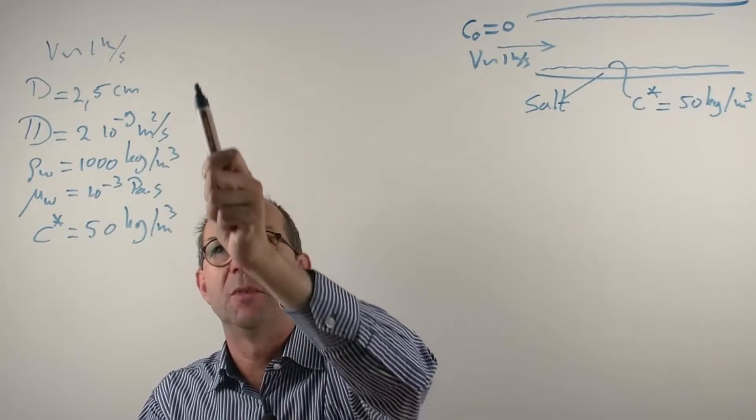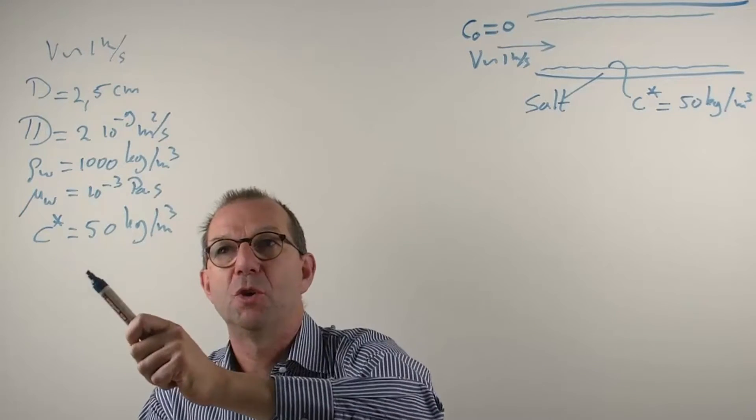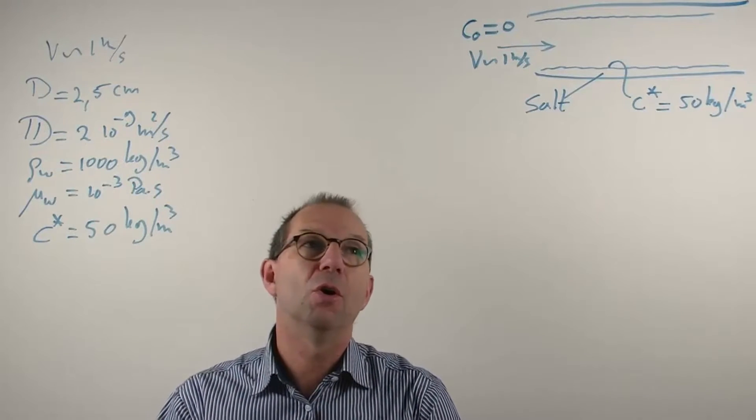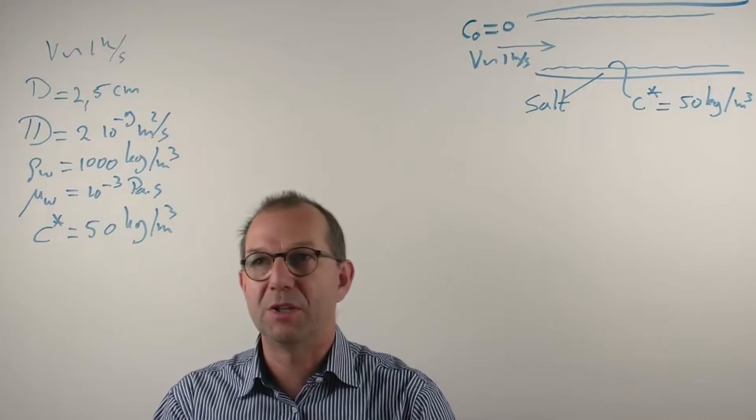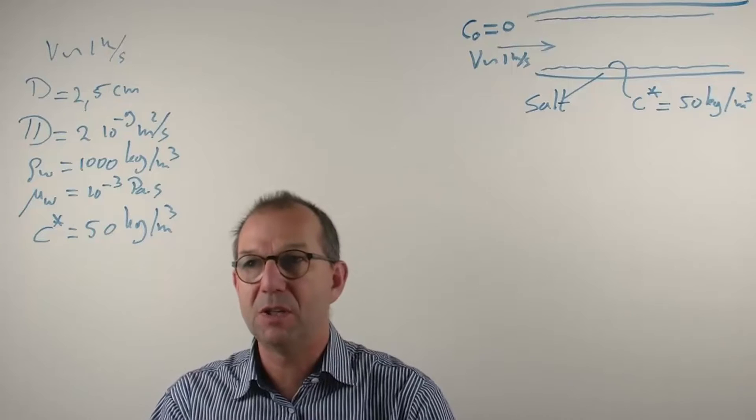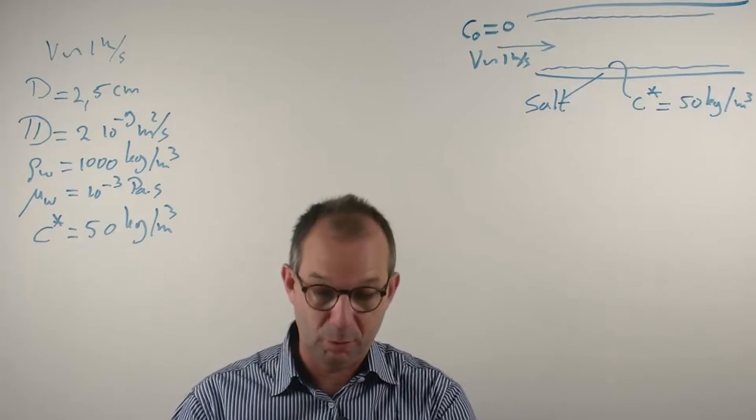I listed here some relevant numbers. The inflow, the diameter of the tube 2.5 cm, the diffusion coefficient of the salt once in water 2×10⁻⁹, density of water, viscosity of water 10⁻³ in SI units, and that C star we already had.